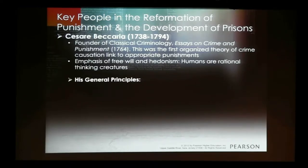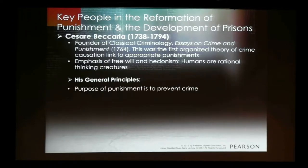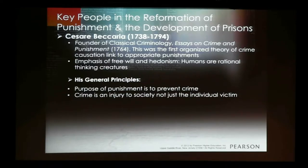Beccaria gave us some general principles that, although dated, eventually became staples in our criminal justice system. He proposed that the purpose of punishment is to prevent crime — a basic deterrence argument. The primary reason we punish people is not to take personal justice into our own hands, but to prevent crime in the future for that person as well as anyone else.